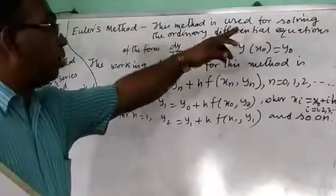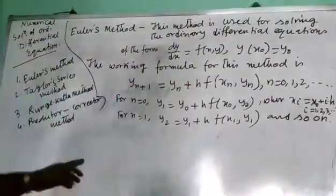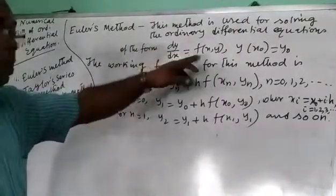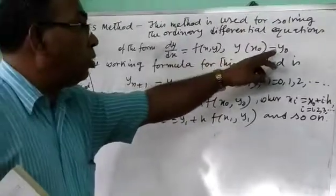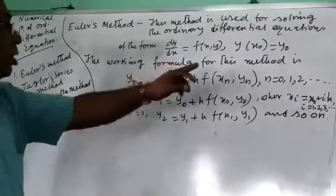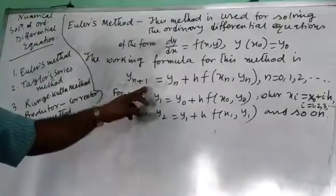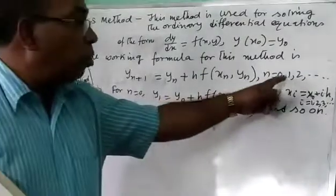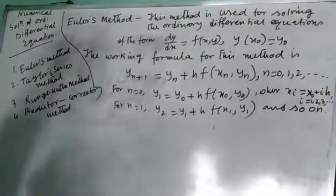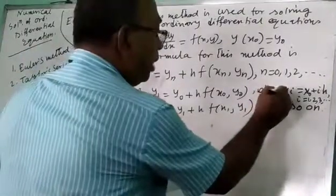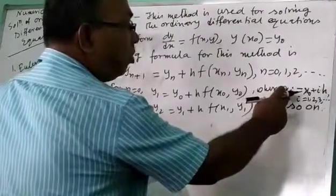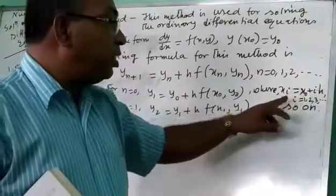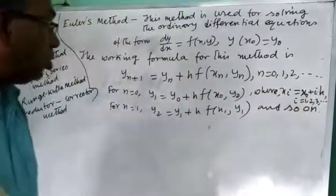This method is used for solving ordinary differential equations of the form dy/dx equal to f(x,y), with y(x0) equal to y0. The working formula for this method is: yn+1 is equal to yn plus h·f(xn, yn), for n equal to 0, 1, 2, and so on.